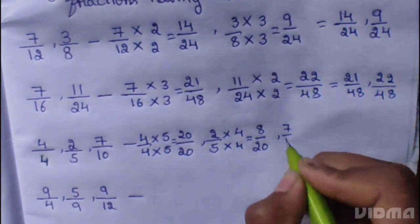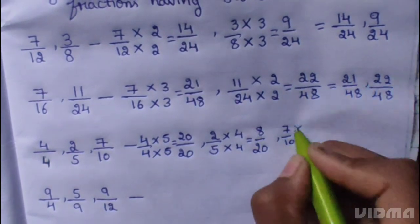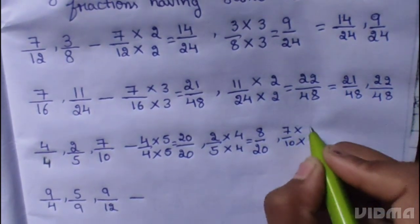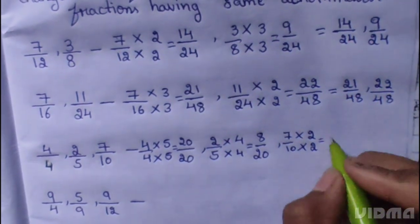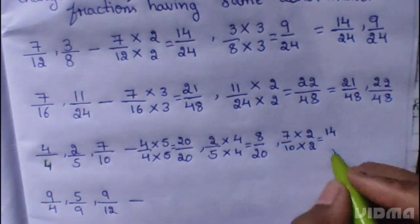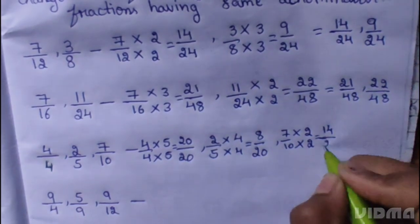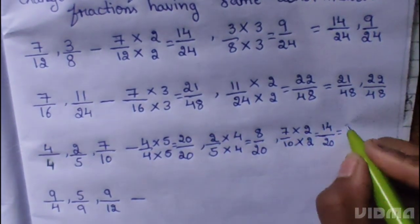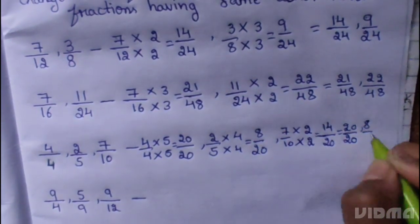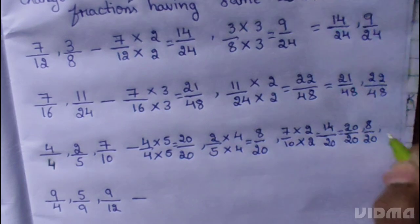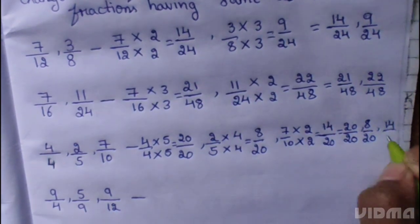7 by 10. 7 multiplied 2, 10 multiplied 2. 7 to the 14, 10 to the 20. Answer 20 by 20, 8 by 20, 14 by 20.